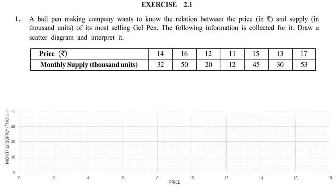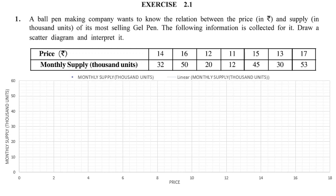The graph shows price from 0 to 18 on the X-axis, since the highest price is 17, marked at intervals of 2. The monthly supply on the Y-axis goes up to 60 in intervals of 10, since the maximum supply value is 53.